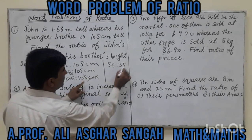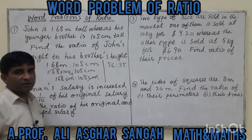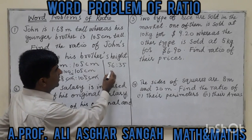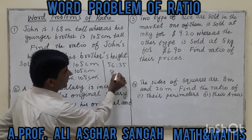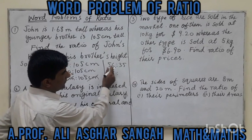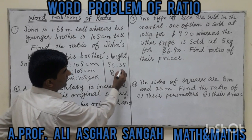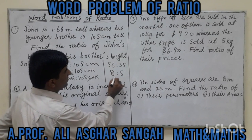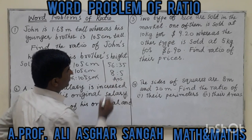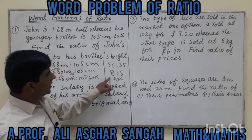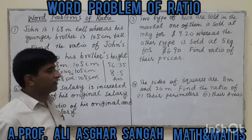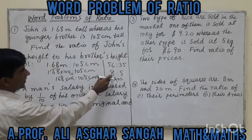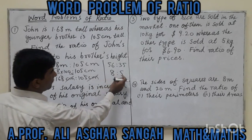Continuing with the table of 7: 56 divided by 7 gives 8, and 35 divided by 7 gives 5. So the final ratio of John's height to his brother's height is 8 to 5.